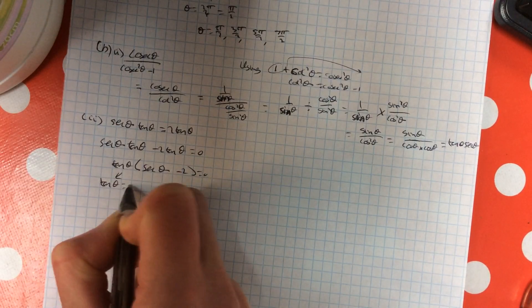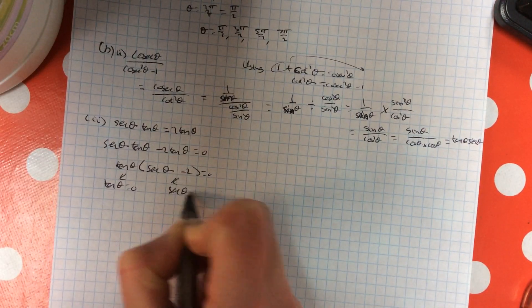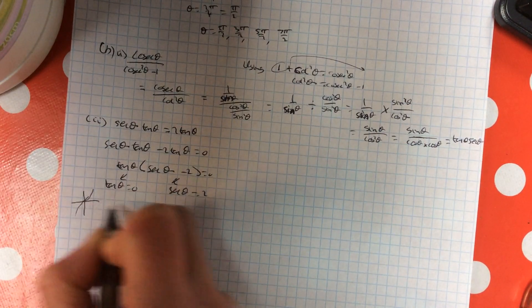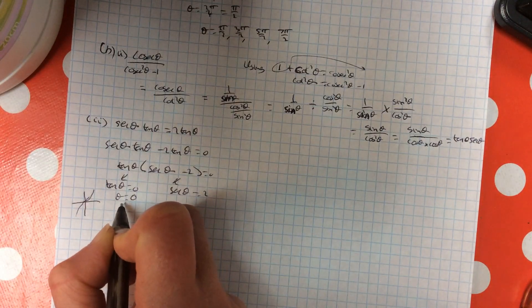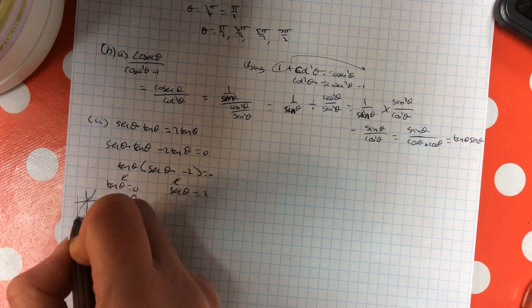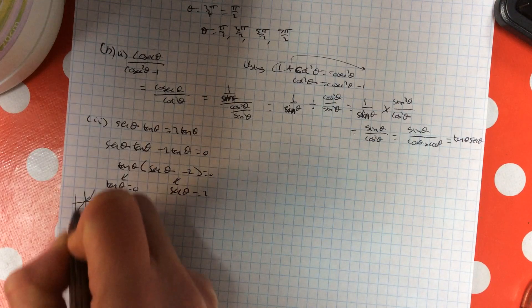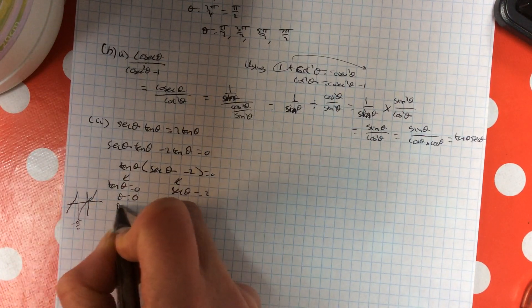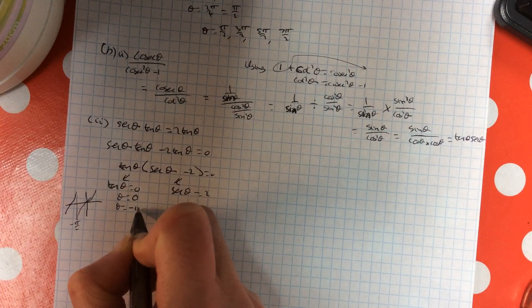So tan equals 0 and sec equals 2. Tan equals 0, and the tan graph is 0, and that's minus pi over 2, and tan equals 0 at minus pi.